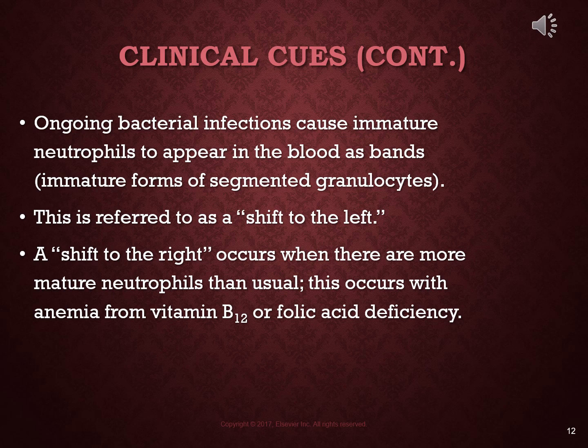Finally, a couple of interesting clinical terms: with ongoing bacterial infections, immature neutrophils appear in the blood as bands, which will show up in your diff. These immature forms of segmented granulocytes are called bands, and this is referred to as a shift to the left. A shift to the right occurs when there are more mature neutrophils than usual, and this occurs in anemia from vitamin B12 or folic acid deficiency. These are things you may read in a physician's H&P or hear when someone is presenting a case.